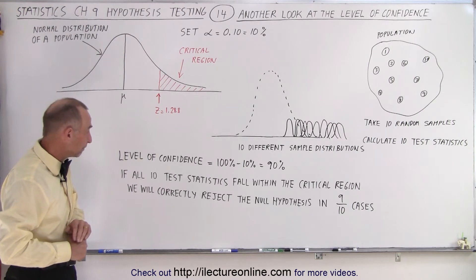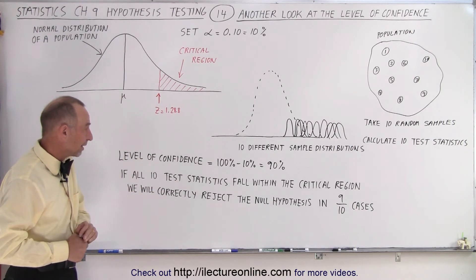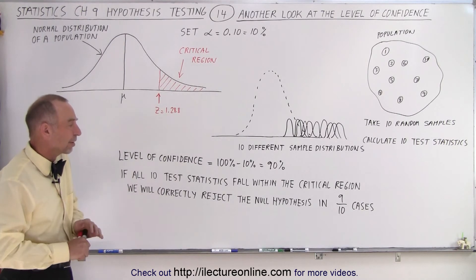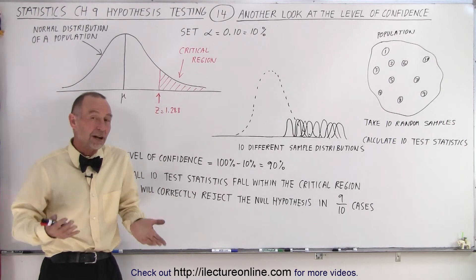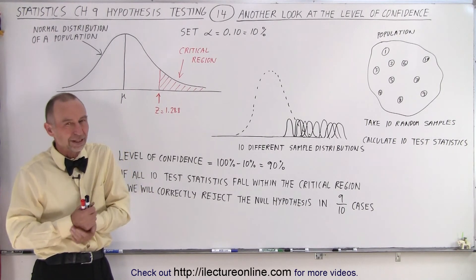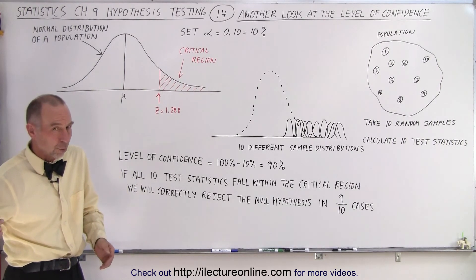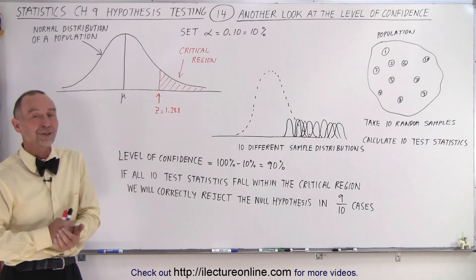Okay, and so if there's 10 cases that fall within the critical region, we will correctly reject the null hypothesis 9 out of 10 times. Again, that's the level of confidence. How much confidence do we have that we make the right decision, which means that if it's only 90%, that one in 10 decisions will end up being wrong, at least statistically. And that is how it's done.